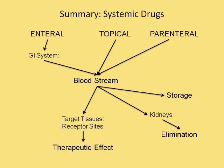To summarize: drugs get into the body through the enteral system, topical medication, or parenterally. All three ways the drug eventually makes it into the bloodstream. From there, the drug can go to the target tissues and have a therapeutic effect, or go to the kidneys and be eliminated. Additionally, some drugs actually go into storage — they are stored in fat cells in various ways.